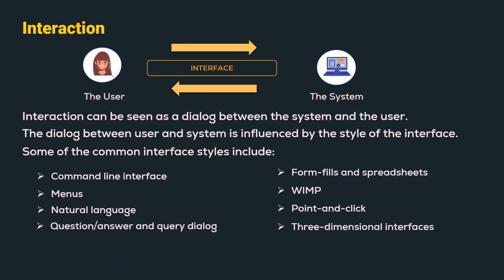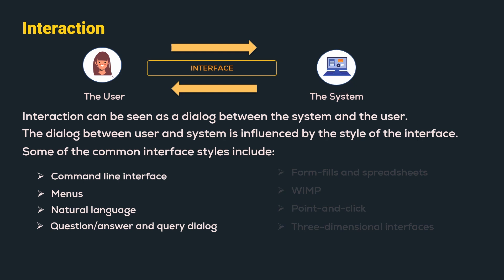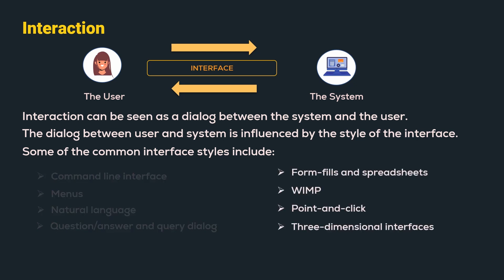In the previous video, we understood that interaction is a dialogue between the system and the user, which takes place through an interface. We understood few of the common interface styles which were command line interface, menus, natural language, question answer and query dialogue. In this video, we will understand the next four interface styles which are form fills and spreadsheets, WIMP, point and click, and three-dimensional interfaces.